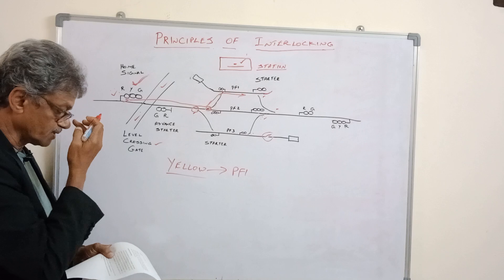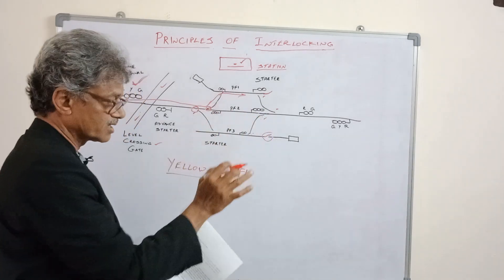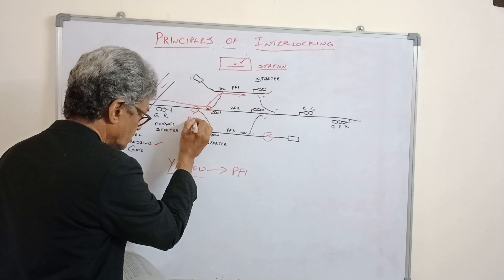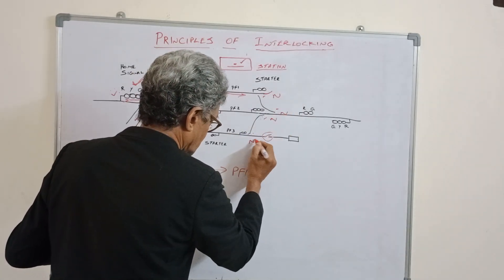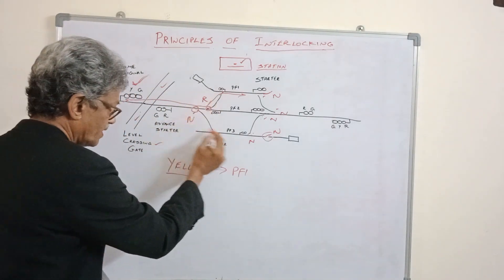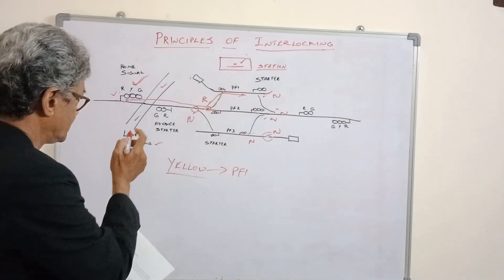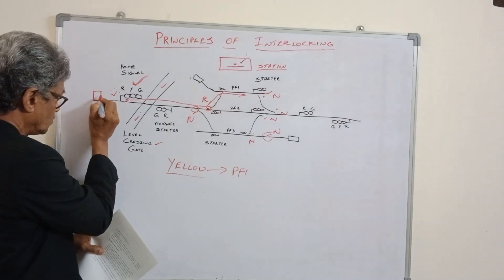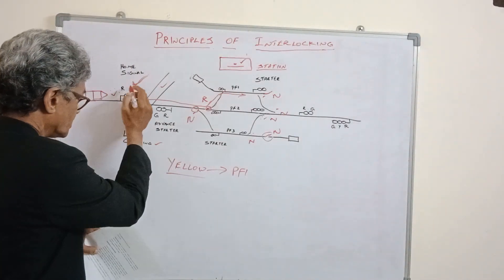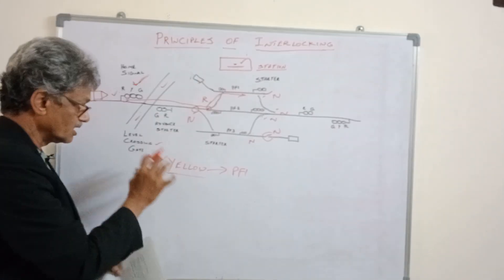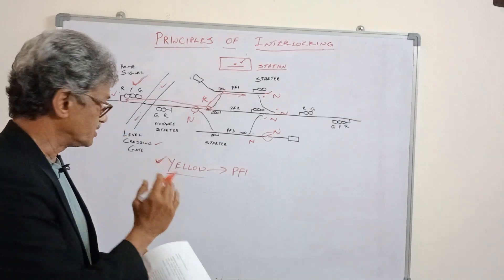When all points are correctly set and locked, we are able to clear the signal. This point is in normal condition, this point is in reverse condition, this one is in normal condition. In this position, we can move the train. We can move the signal — that is, clear it — to allow the train movement. We can also move the signal relating to the level crossing gate and close it against road traffic.